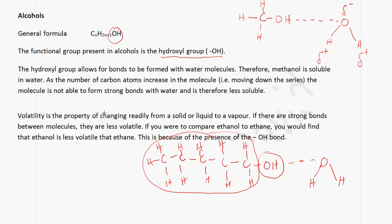Volatility is the property of changing readily from a solid or liquid into a vapor. If there are strong bonds present between the molecules, they are less volatile. If you were to compare ethanol to ethane, you will find that ethanol is less volatile than ethane, and this is because of the presence of the OH bond.